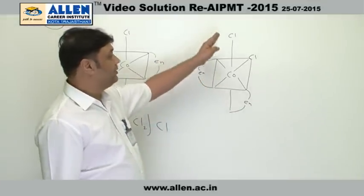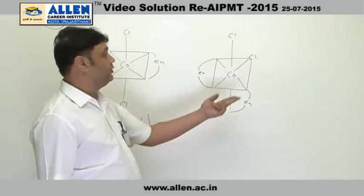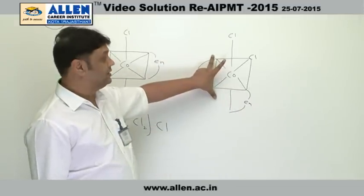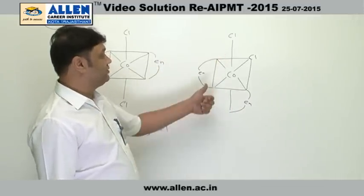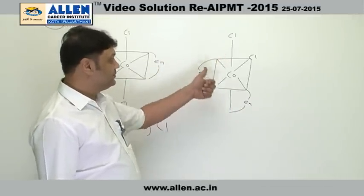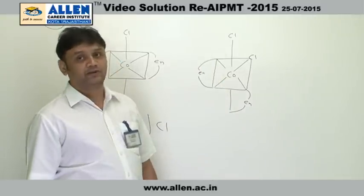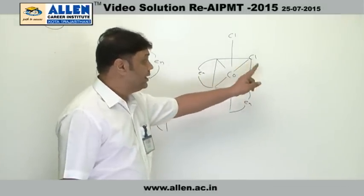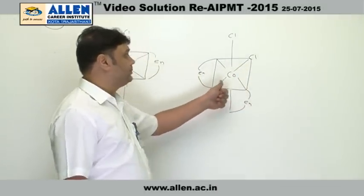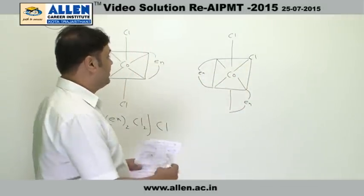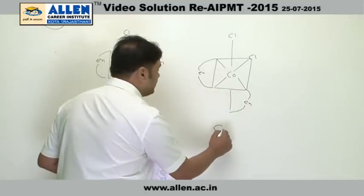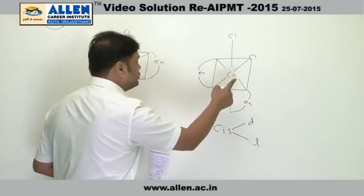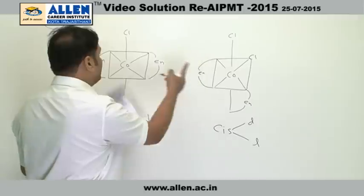The cis arrangement does not have any plane of symmetry — whether you take the horizontal plane or the vertical plane, the molecule will not be cut into two identical halves, and that is why this molecule will show optical activity. Its mirror image will be an enantiomer, so the cis will have two compounds: cis-dextro and cis-levo, giving two isomers.